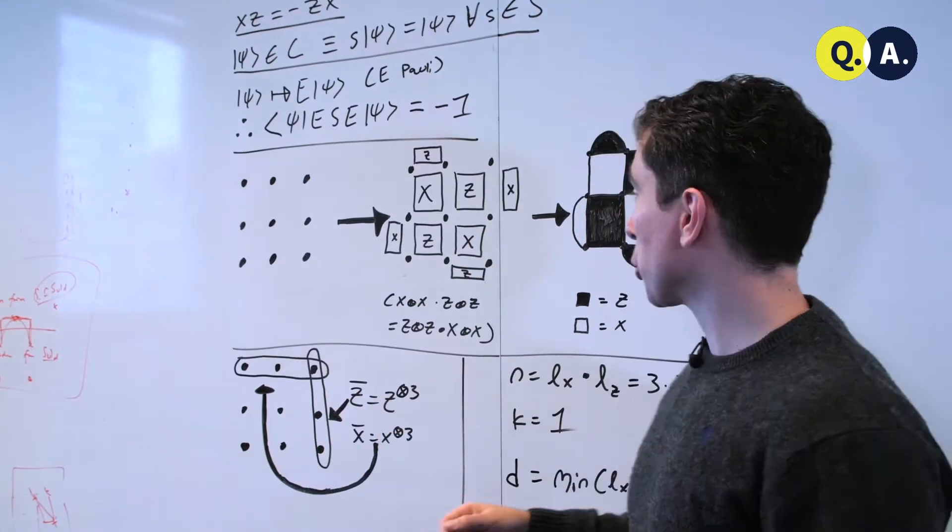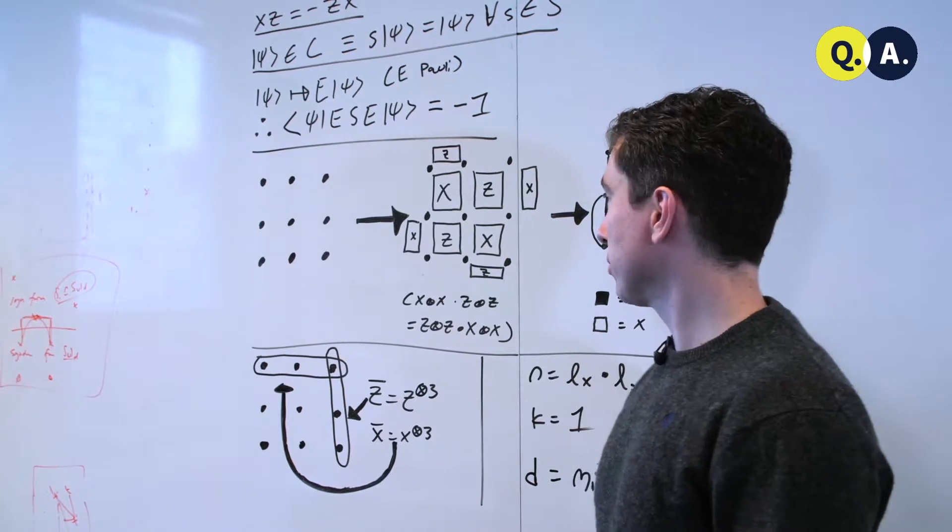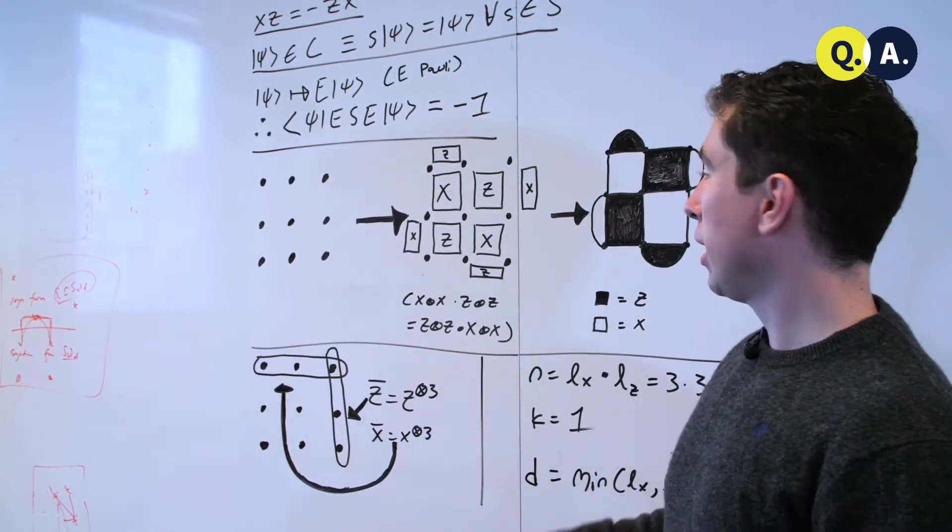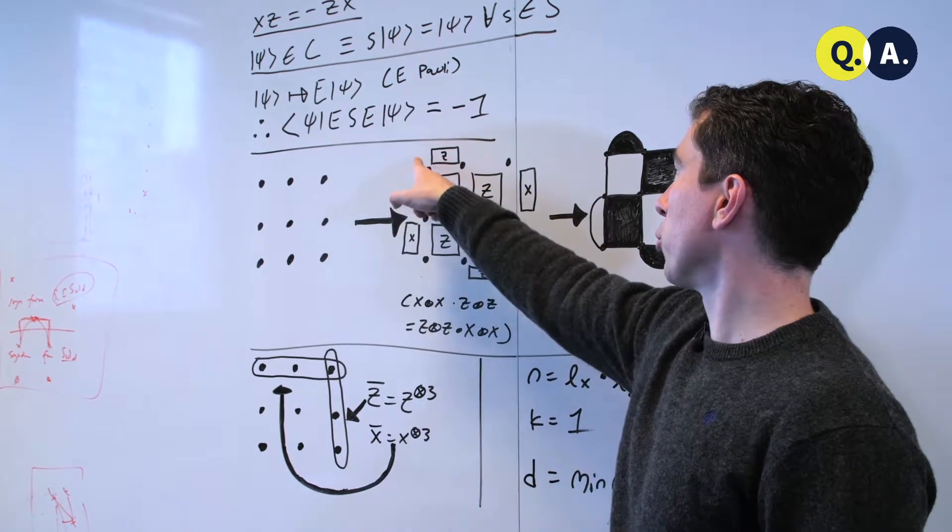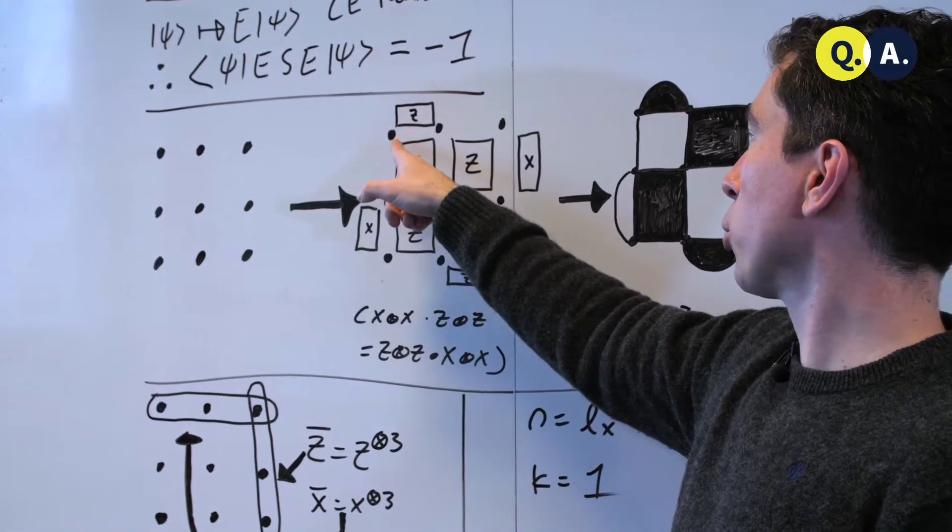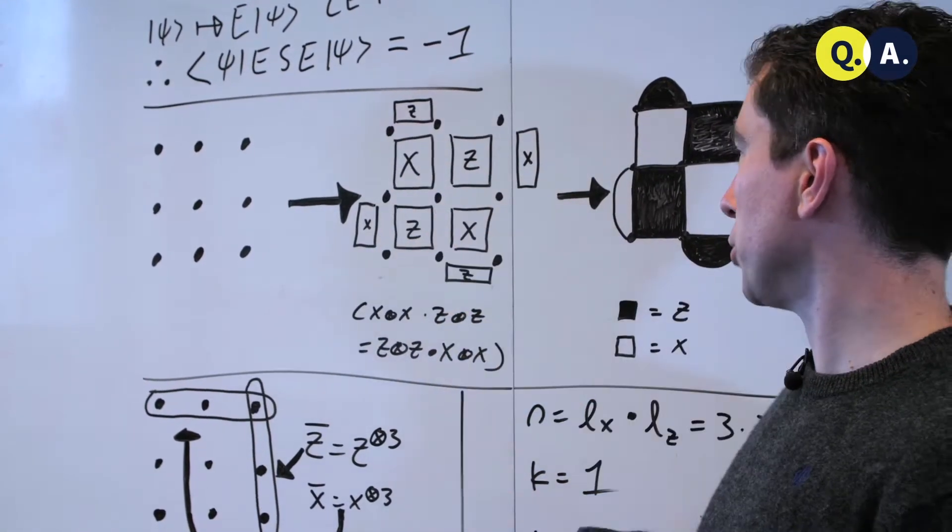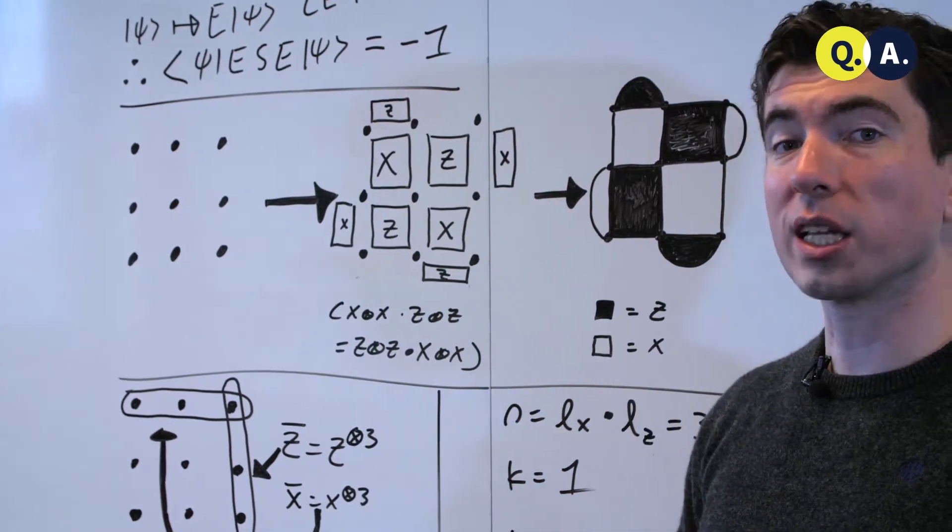So how do we make a surface code? We begin with a square array of qubits that we lay out here, and then we start defining stabilizers. Here's a weight 2 stabilizer of the form zz on these two qubits. We have a weight 4 stabilizer of the form xxxx on these four. And similarly, local stabilizers are defined all over the lattice.